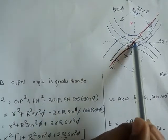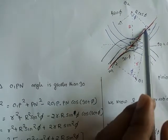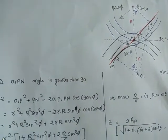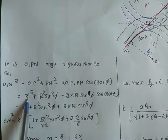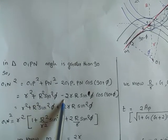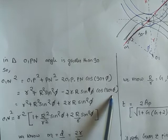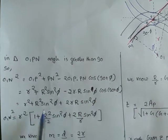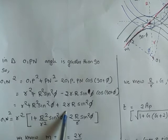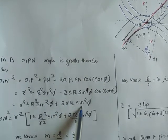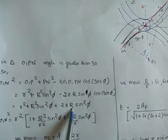So O1N square is nothing but small r square plus R square sin square phi minus 2 small r sin phi cos of 90 plus phi, which simplifies to r square plus R square sin square phi plus 2 small r R sin square phi.